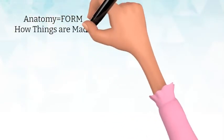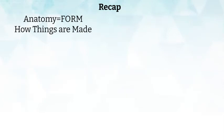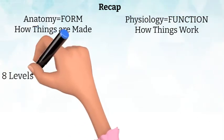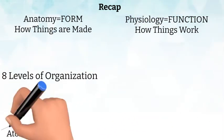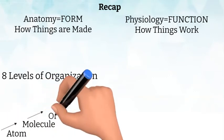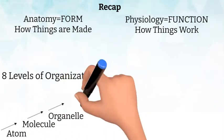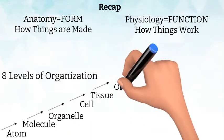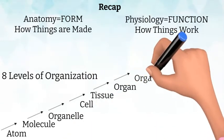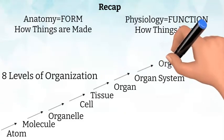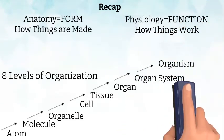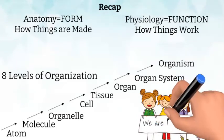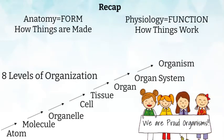And now for a quick recap. Anatomy is about form or how things are made, and physiology is about function and how things work. Our body has eight levels of organization. It starts with atoms, then molecules, organelles, cells, tissues, organs, organ systems, and finally you — the organism.